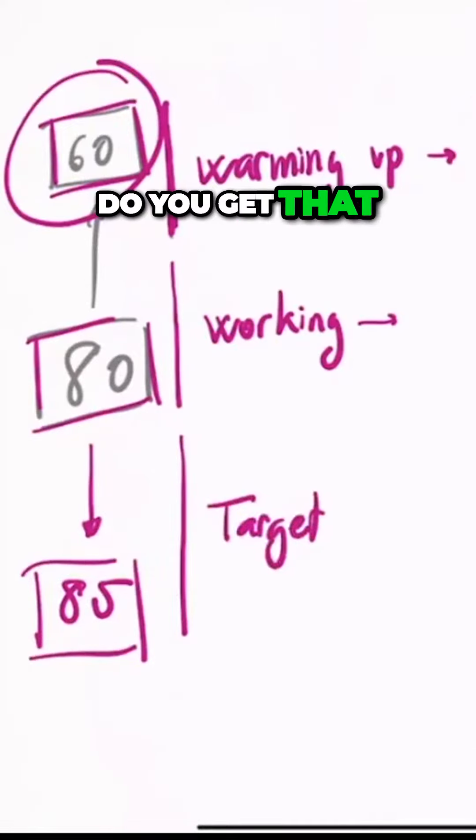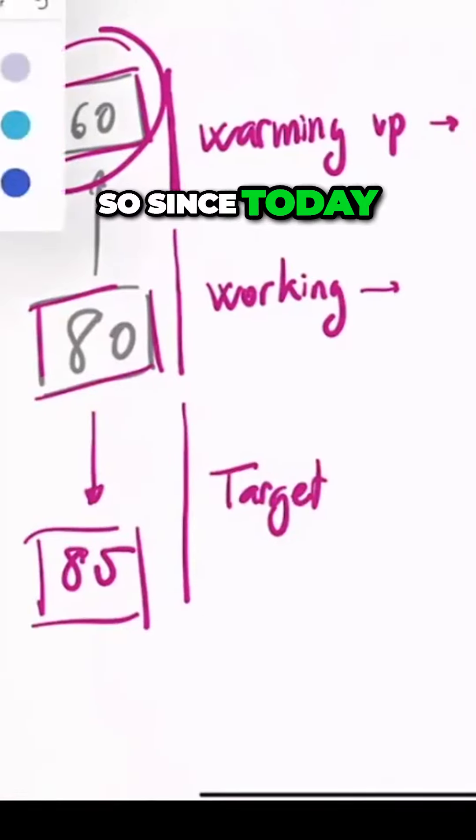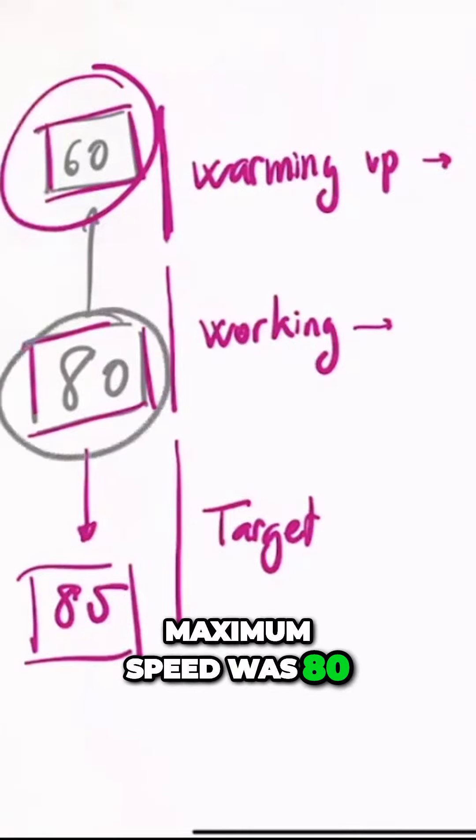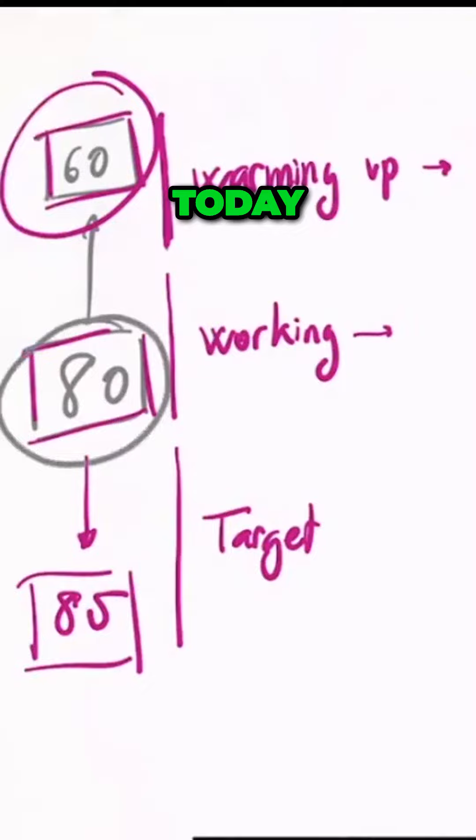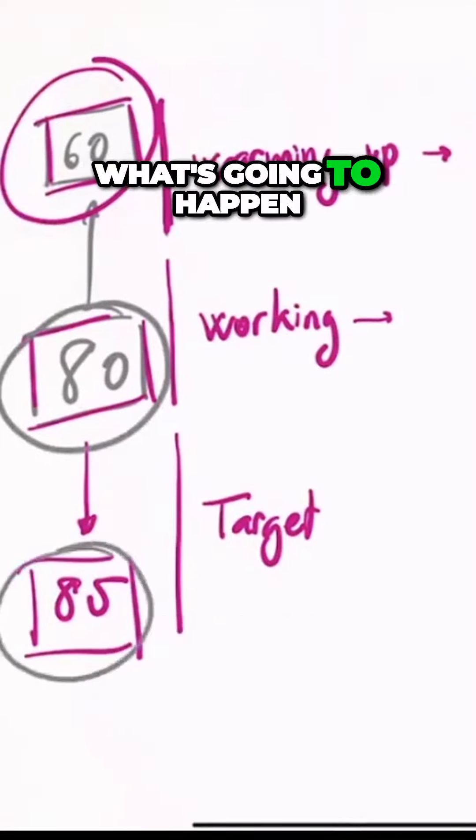Do you get that? Okay, nice idea. So what's going to happen? So since today, yesterday my maximum speed was 80. Today my maximum speed is 85. What's going to happen tomorrow?